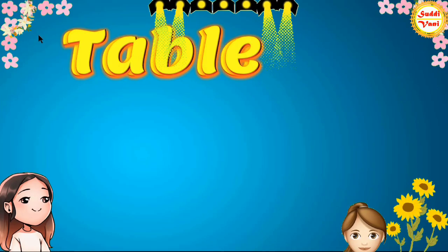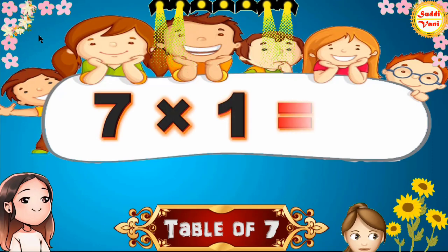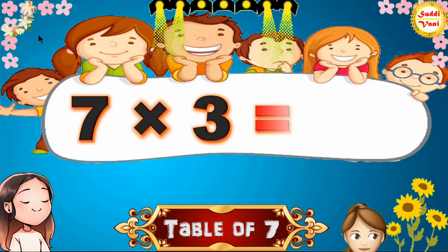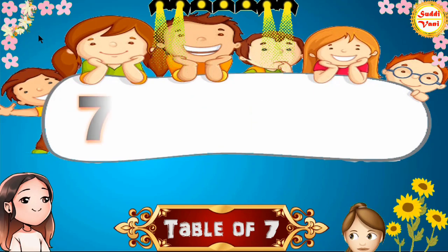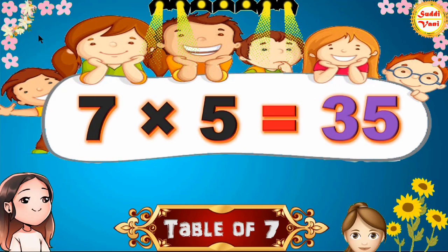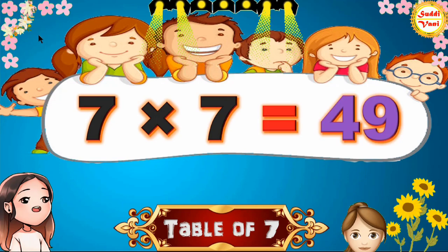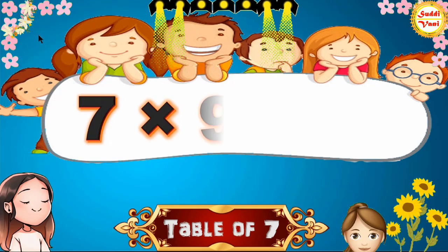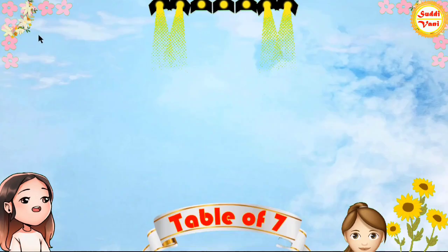Hello children, we will learn table of 7. 7×1=7, 7×2=14, 7×3=21, 7×4=28, 7×5=35, 7×6=42, 7×7=49, 7×8=56, 7×9=63, 7×10=70. Once again.